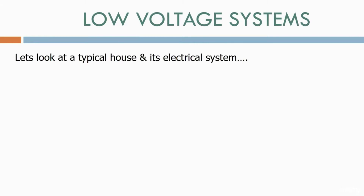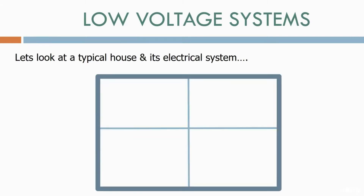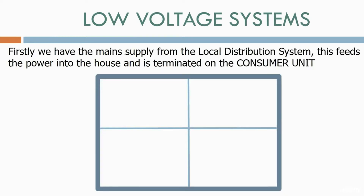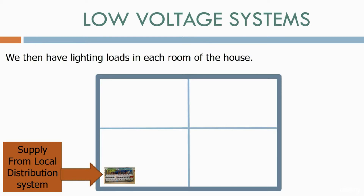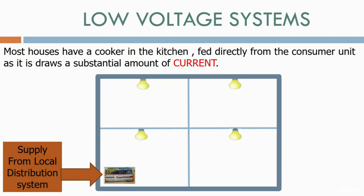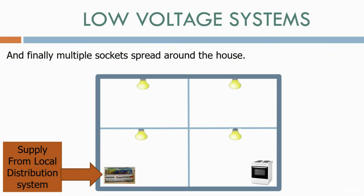Let's look at a typical house and its electrical system. Firstly, we have the main supply from the local distribution system. This feeds the power into the house and is terminated on the consumer unit. We then have lighting loads in each room of the house. Most houses have a cooker in the kitchen fed directly from the consumer unit, as it draws a substantial amount of current, and finally multiple sockets spread around the house.